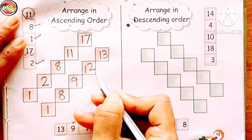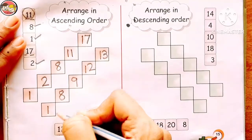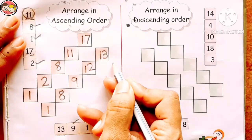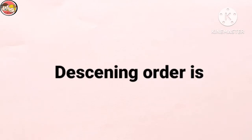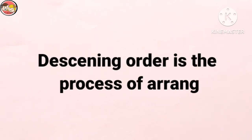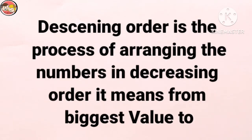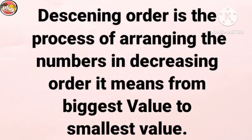Ascending order means arranging numbers from smallest to largest — going up is ascending order. Next: descending order. The word descending means coming down. Descending order is the process of arranging the numbers in decreasing order, from biggest value to smallest value. In very simple language, descending order means arranging numbers from biggest to smallest.